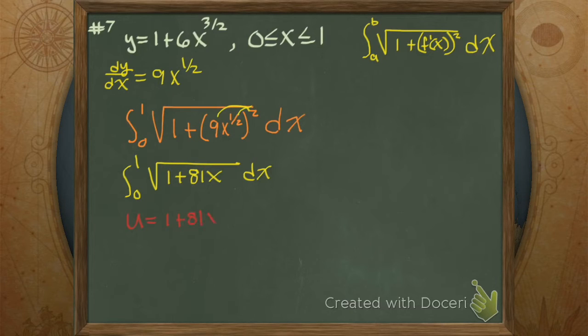U sub. Then we've got to get our du. That's 81x dx, which gets us our du over 81 is dx, because we're making that substitution.